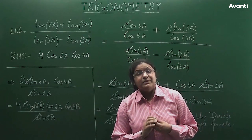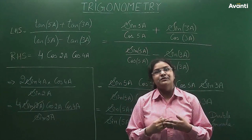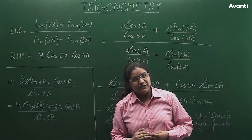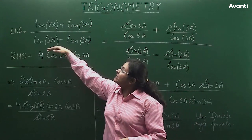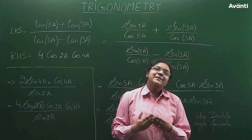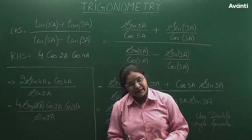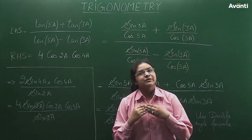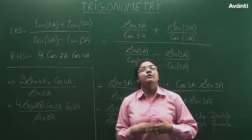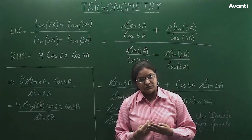Hi everyone. In this question we have an expression where the numerator has tan of c plus tan of d, and the denominator has tan of c minus tan of d. Until now you have studied sine c plus sine d, or cos c plus cos d. But for tan, we don't have a direct formula. Whenever you have an expression like this, you first try to break it down into sine and cosine, because the right-hand side has cosine terms, making it easier to solve.